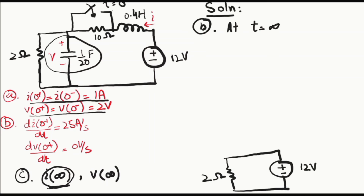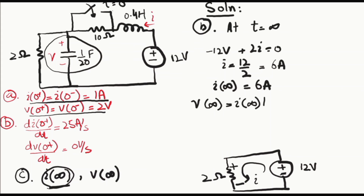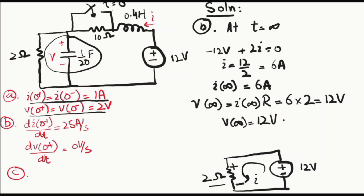The final circuit has a 12-volt source and a 2-ohm resistor. Applying KVL: −12 + 2i = 0, so i(∞) = 12 / 2 = 6 amperes. Then V(∞) = i × R = 6 × 2 = 12 volts. So the final values are: current at t equals infinity is 6 amperes, and voltage at t equals infinity is 12 volts.